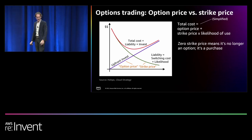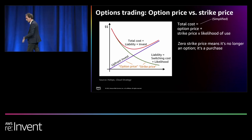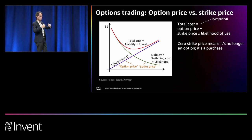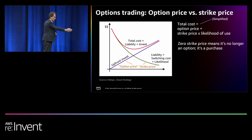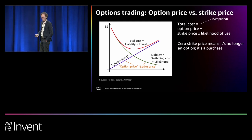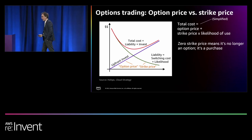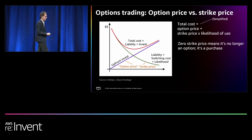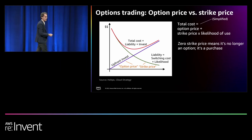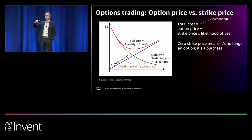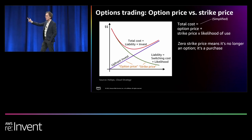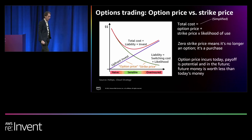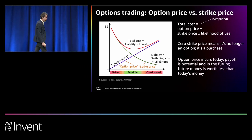The option price is what you pay right now in order to have the option later. The strike price is the money you still pay when you utilize the option — because even with all the layers, that will never be zero. And making the strike price zero is not the goal — technically it's no longer an option if you made all the investment upfront. The goal is to find the optimum between upfront investment and having a good read on potential switching cost. Models like this allow you to make much sharper decisions.